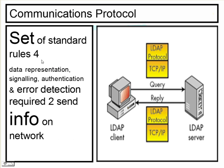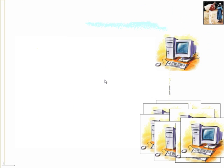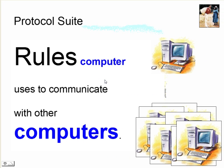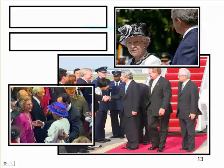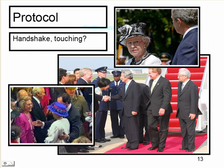A protocol is a set of rules — a standard set of rules for representing signaling, authentication, error detection, and sending information to the network. These are the rules a computer uses to communicate with other computers. In everyday terms, protocol is how you meet or greet people — how you handshake them, or whether you bow.